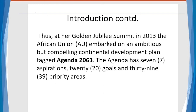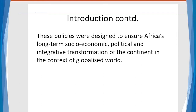At the Golden Jubilee Summit in 2013, the African Union embarked on an ambitious but compelling continental development plan tagged Agenda 2063. The Agenda has seven aspirations, 20 goals, and 39 priority areas. These were designed to ensure Africa's long-term socioeconomic, political, and integrative transformation of the continent in the context of a globalized world.